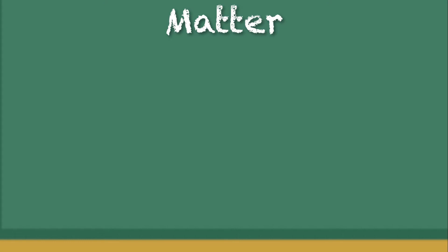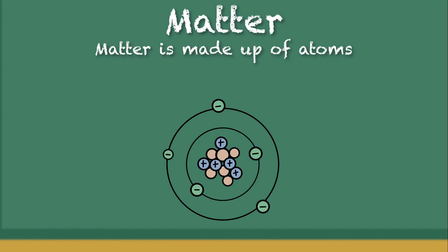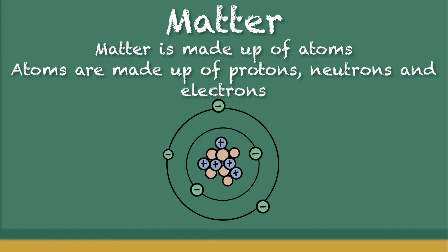Matter is made up of atoms. Atoms are made up of protons, neutrons, and electrons. The middle is made up of protons and neutrons, and outside is made up of electrons.